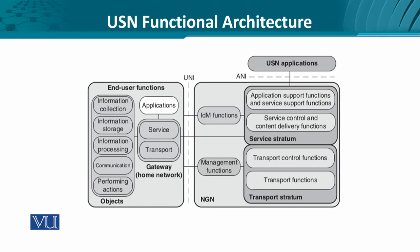The network-to-user interaction is through ANI, and the end user interacts with the network through the user interface. End-user functions include managing, using, defining, and offering certain objects. Each object is characterized by certain functionality like information collection, storage, processing, and communication. The end user, with the front end and its own services and transport mechanisms, talks to the NGN. Overall, this functional architecture meets the NGN vision of service provisioning when sensor network services are offered under the guise of USN.